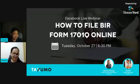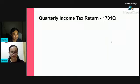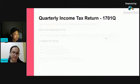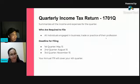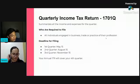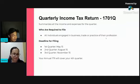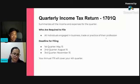Let me give a short background on the 1701Q. This form summarizes all income and expenses for the quarter. All individuals engaged in business, trade, or practice of profession are required to file this form — it's the common denominator of taxes that everyone has to pay. The deadline for filing the third quarter is November 15 with Taxumo, and Taxumo's deadlines are earlier than the BIR's. Note that there is no fourth quarter filing because it is covered by your annual ITR filing in April.